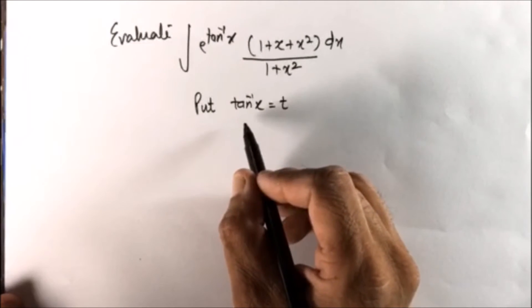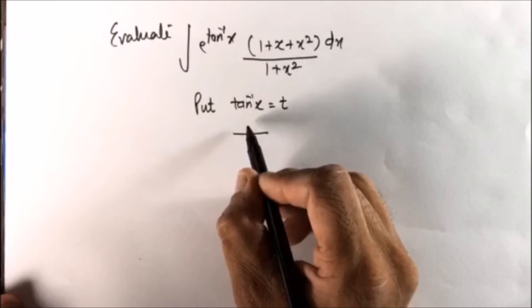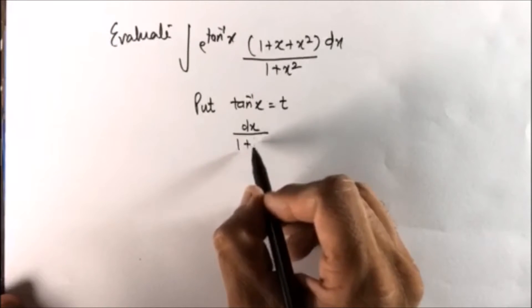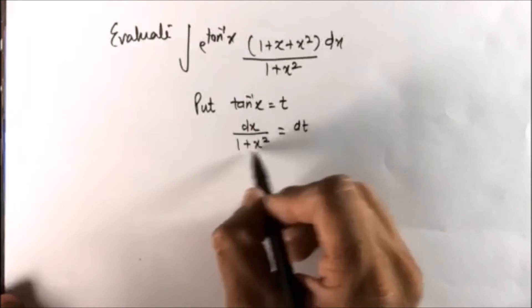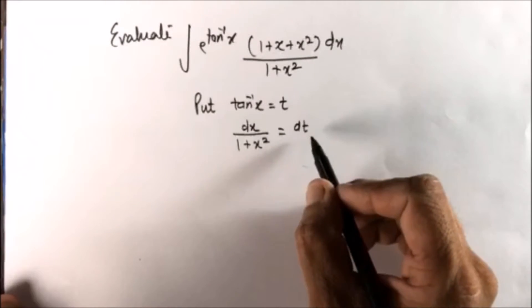So we are putting tan inverse x is equal to t and differentiating it with respect to x, and this is dt by dx. So in terms, dx upon 1 plus x squared is dt.